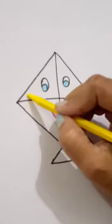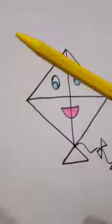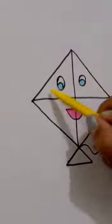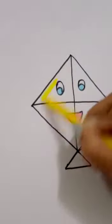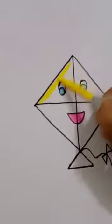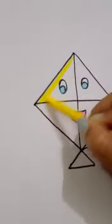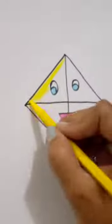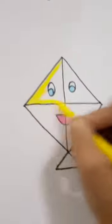Now, we will start with kite color karni hai. I am using yellow color. So, sabse pehle hum iske edges se jo hum iske side se color karenge. Dark coloring we will do like this.